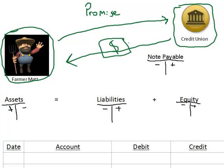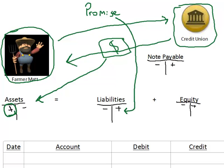Now that we understand the essence of the transaction, let's apply it to the accounting equation. Farmer Matt received money — money is an asset — so his cash increased. That means we need to debit cash. For every debit, we need a corresponding credit. Farmer Matt gave a promise, so his obligations increased. We are going to credit a liability — more specifically, we're going to credit notes payable, because notes payable is a form of a liability.